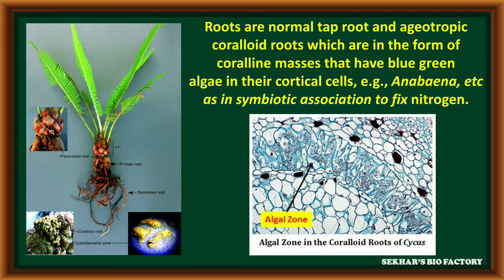In the coralloid roots, a coralline mass having blue-green algae in its cortical cells is called the algal zone in its transverse section. Anabaena is a blue-green algae. It is a symbiont with roots of Cycas, called coralloid roots, and it helps in nitrogen fixation.